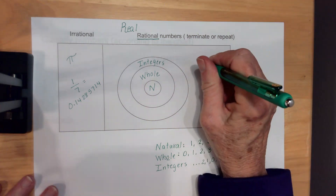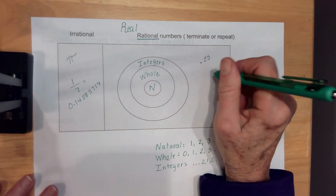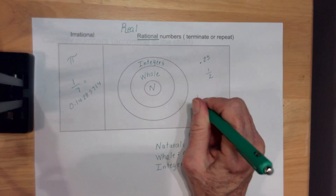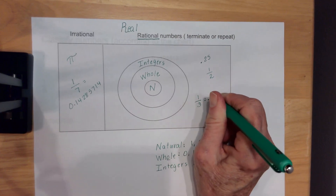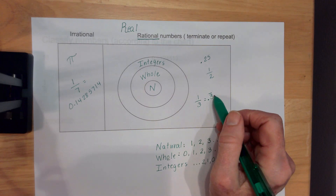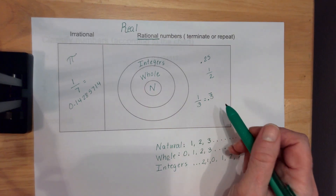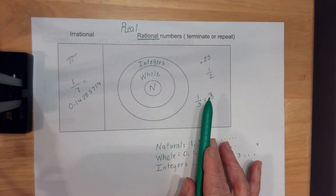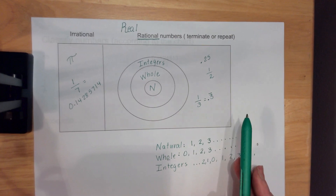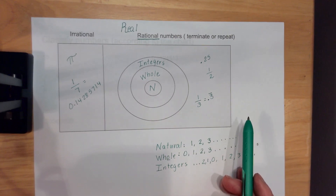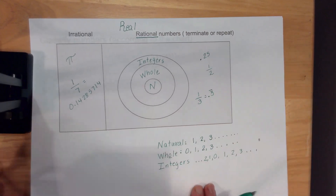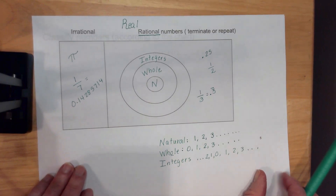Rational numbers are like your terminating decimals, fractions that give you terminating decimals, and your repeating numbers. Because with repeating numbers, I know what's going to come next — they're rational, they're predictable. A 3 is going to come after that because I have a line over it. So everything we talk about is basically predictable: repeating decimals, terminating decimals, whole numbers, integers — you're going to use this type of table to classify numbers.